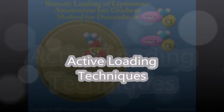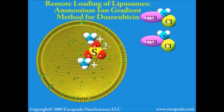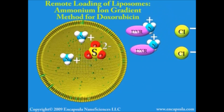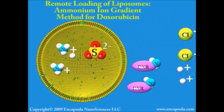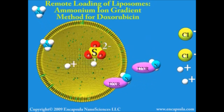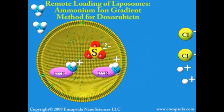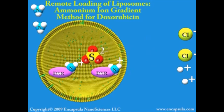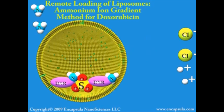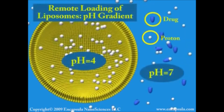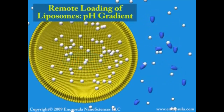Most water-soluble compounds must be present at the time the liposomes form to be encapsulated. Some ionizable compounds can cross the membrane in their neutral form and be converted to an insoluble salt form inside the liposome. This remote loading technique allows drugs to be loaded into liposomes after the liposomes are formed, but is not widely applicable. Some ionizable compounds can also be loaded into pre-made liposomes with a pH gradient — the neutral form, but not the charged form, of a compound can cross the membrane into the liposome but can't escape due to the high concentration of protons inside.